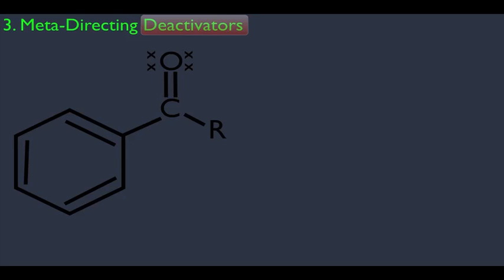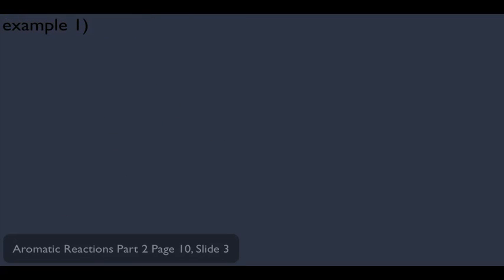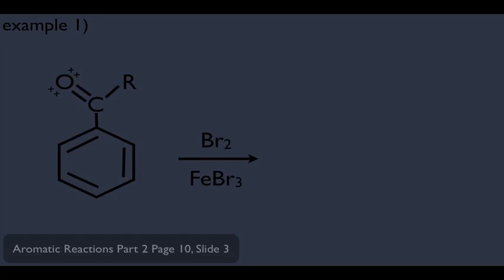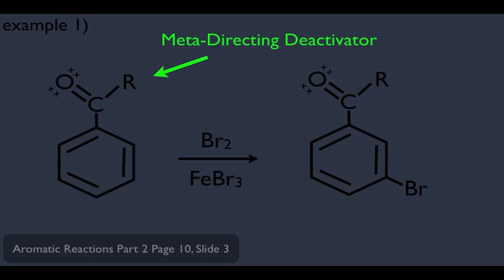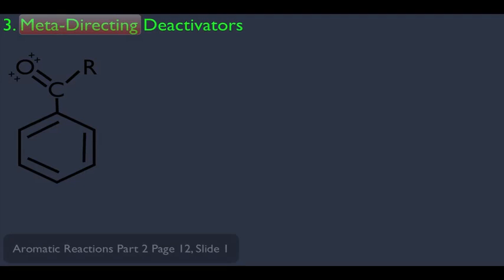The other truth about this substituent is that it's meta-directing. As an example, if we had a molecule and wanted to predict the product of a reaction with Br₂/FeBr₃, we know a Br is added to the benzene ring. Since the molecule already has a substituent, we ask what kind it is — and since it's a meta-directing deactivator, the Br would land meta to it. The analysis involves adding electrophiles ortho, para, and meta, seeing what intermediates we get, and determining the more stable, more likely pathway.